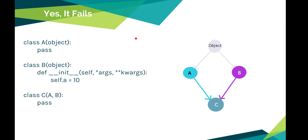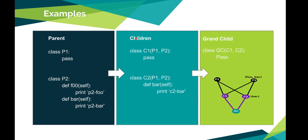Then I have two children, C1 and C2. Both are inherited with P1 and P2. C1 I don't have anything inside. And C2 I have only one method called bar that prints C2 bar. Then I have a grandchild GC which is inherited by C1 and C2. This is the whole structure where I have P1, P2 with two methods, C1, C2 with one method, and GC.